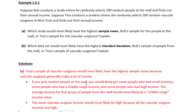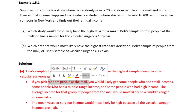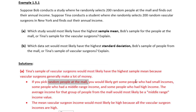This makes sense because if you were to pick random people at the mall, you would likely get some people who had low incomes, some who had middle incomes, and some who had high incomes. It would be a wide range of values.